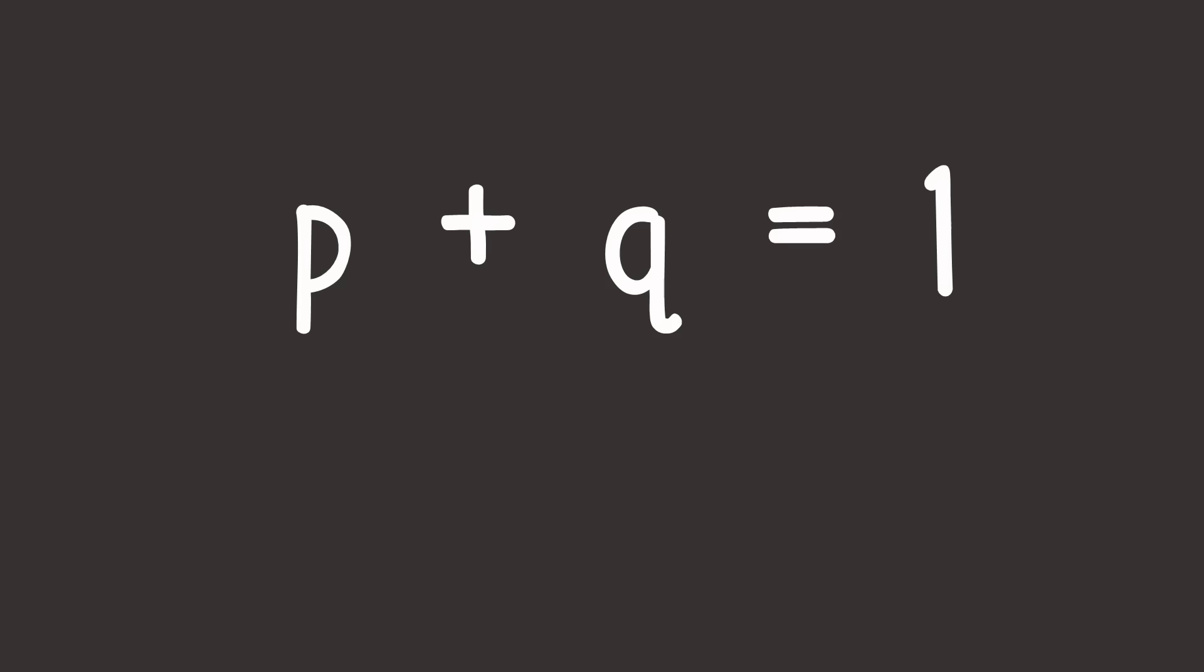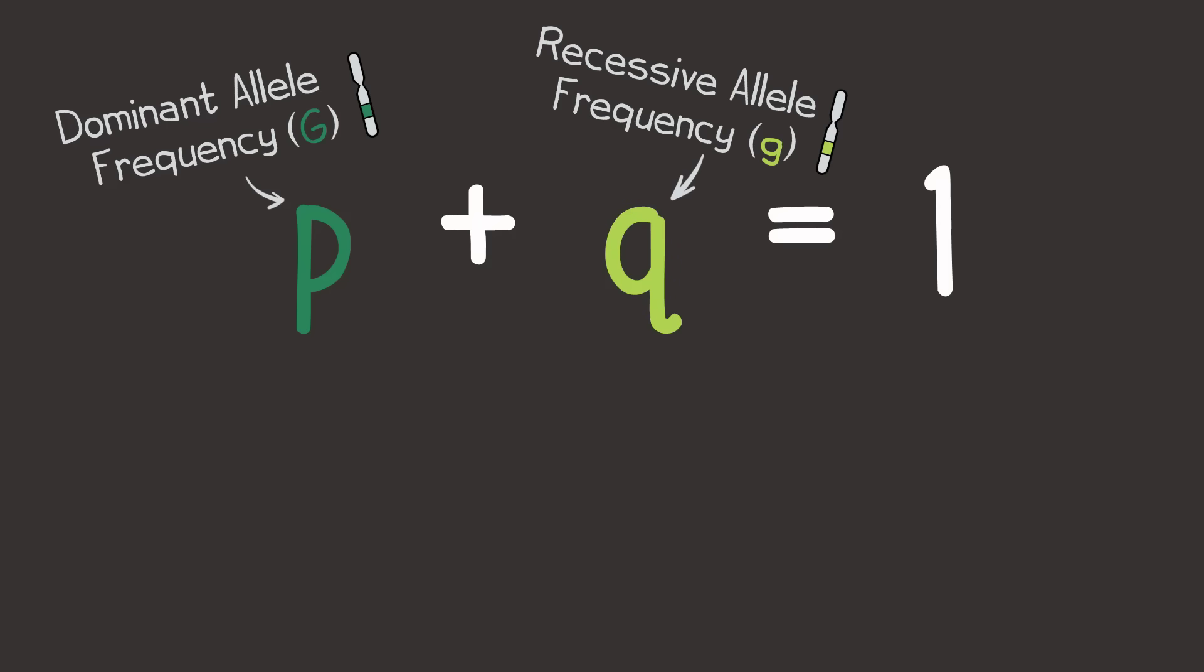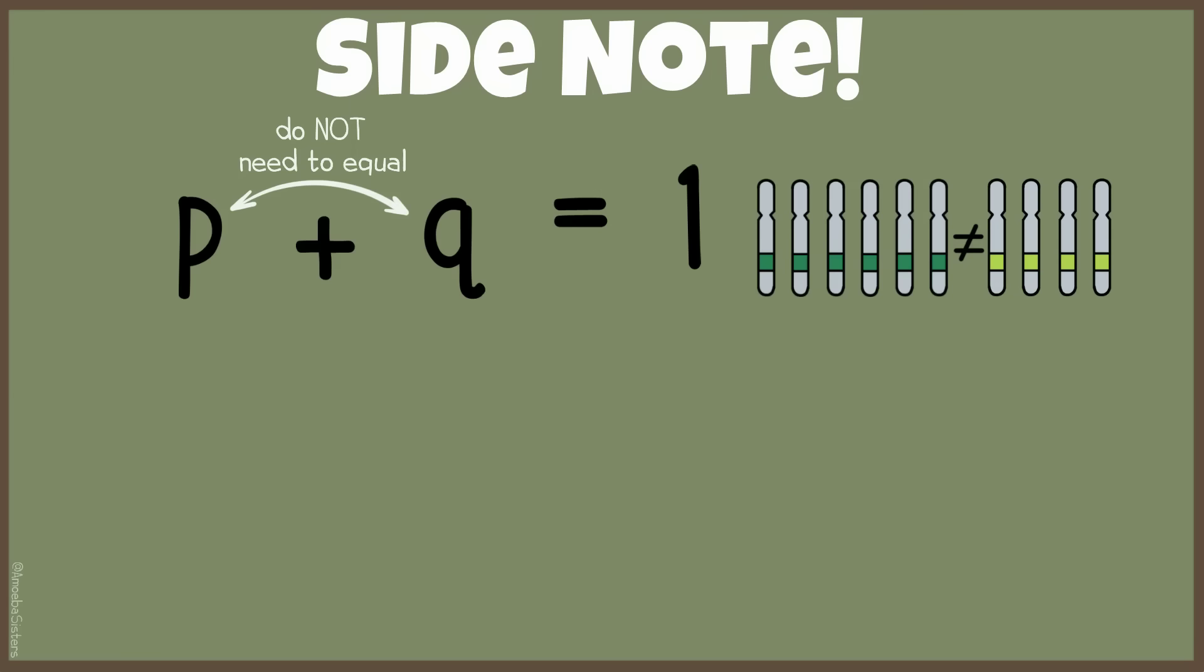p plus q equals 1. In this equation, p is the dominant allele frequency in the population, and q is the recessive allele frequency in the population. By the way, Hardy-Weinberg equilibrium doesn't mean that p has to equal q.